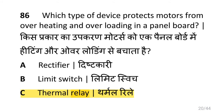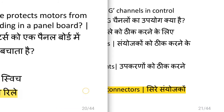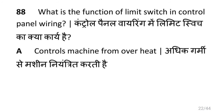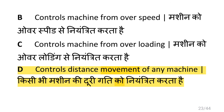Which type of device protects the motor from overheating and overloading in the panel board? i.e. thermal relay. What is the use of G channel in control? i.e. for fixing terminal connectors. What is the function of limit switch in control panel wiring? i.e. it controls the distance movement of any machine.